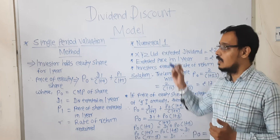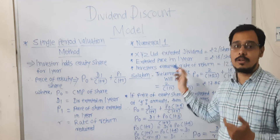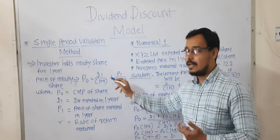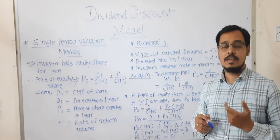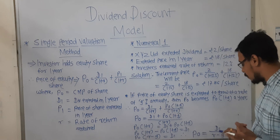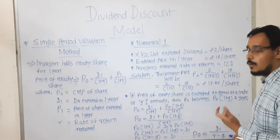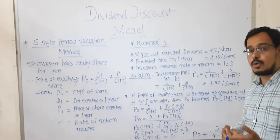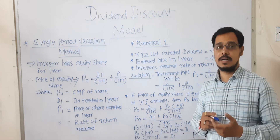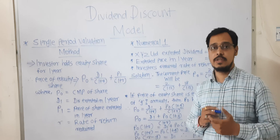We have discussed the single period valuation method, how to calculate numericals using that formula, and what to do if the rate is growing at G percent — in which case P0 equals D1 divided by (R minus G) is the formula for G percent growth per annum. In the coming video, we are going to study the next method of valuation of equity share. Thank you.